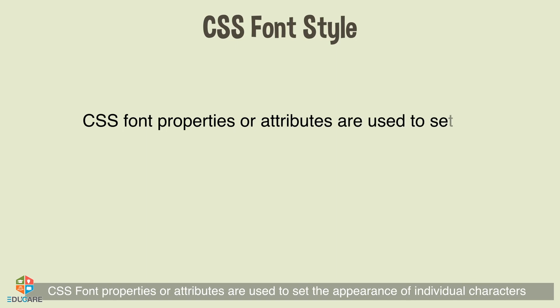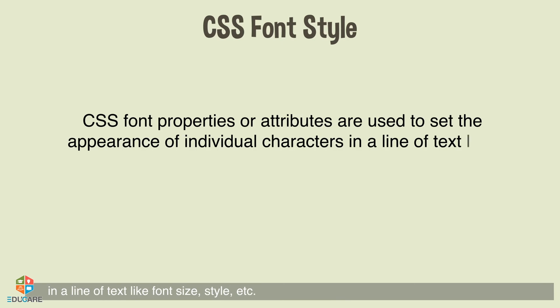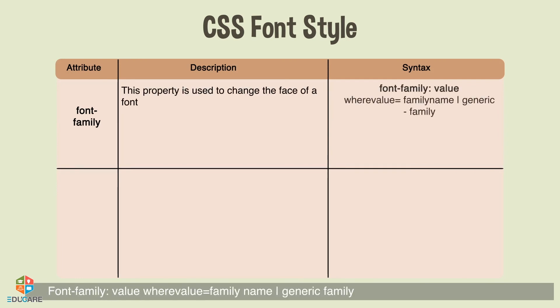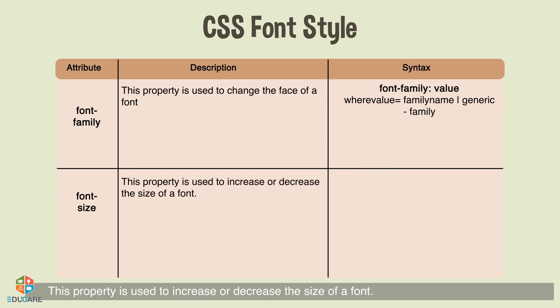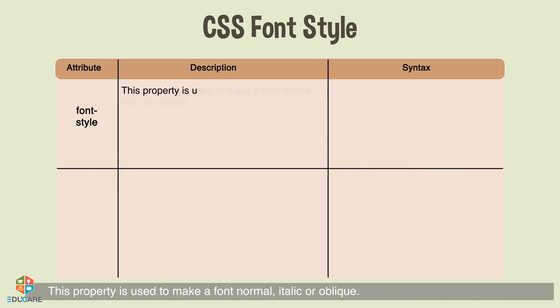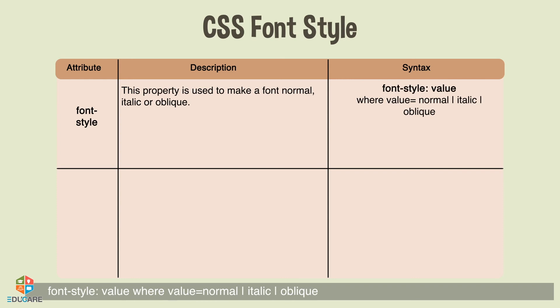CSS Font Style: CSS font properties are used to set the appearance of individual characters in a line of text, such as font size and style. The font-family property changes the face of a font; its value can be a family name or a generic family. The font-size property increases or decreases the size of a font; its value can be keywords like extra-small, small, medium, large, extra-large, smaller, larger, a length, or a percentage. The font-style property makes a font normal, italic, or oblique.